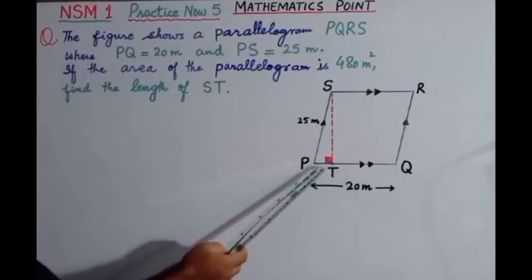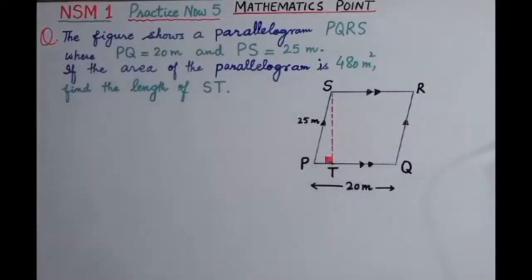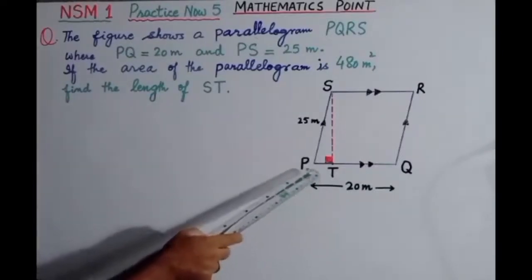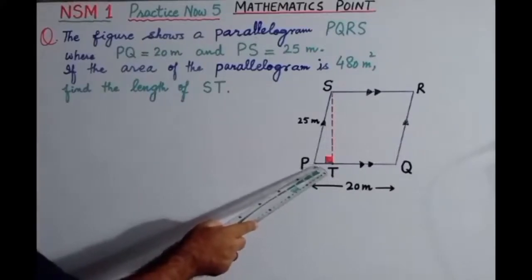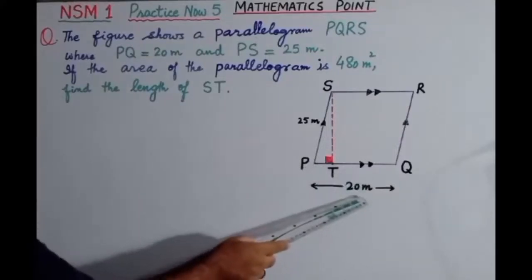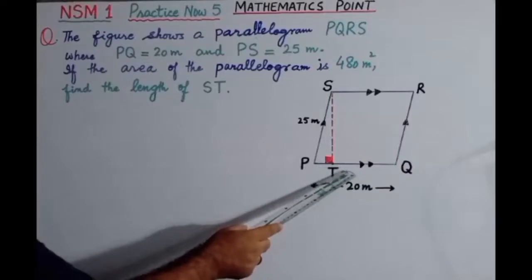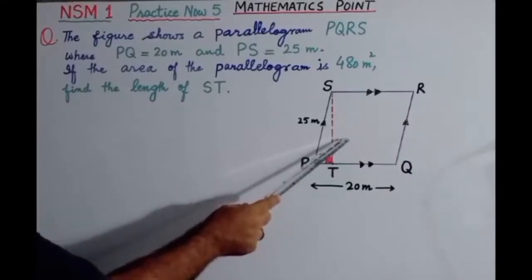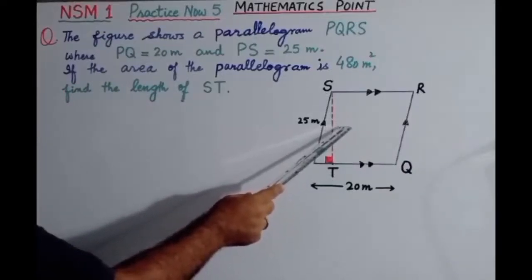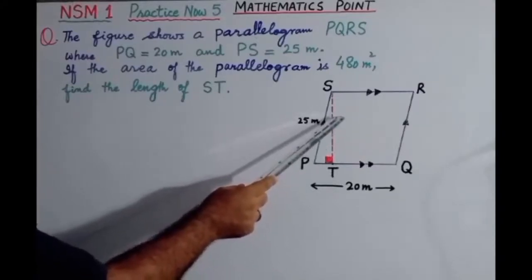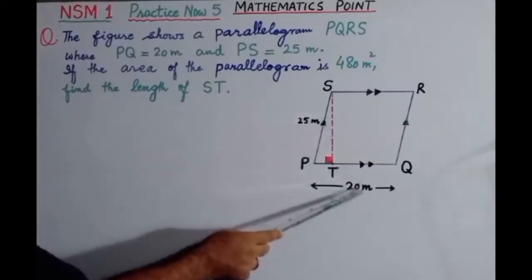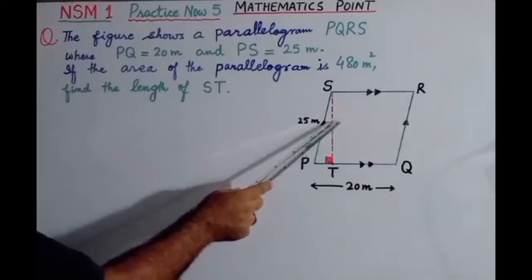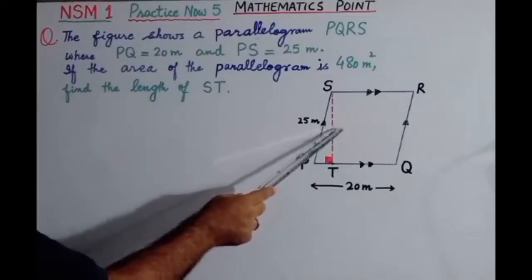If you look at ST, ST is basically a perpendicular which falls on the side PQ. So if we take the side PQ as the base, then ST is called the perpendicular — and this length is also called the height.